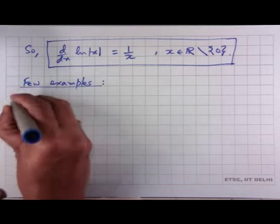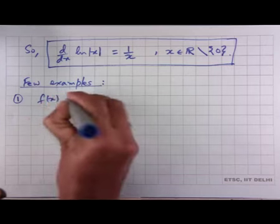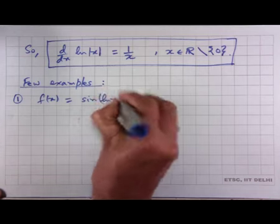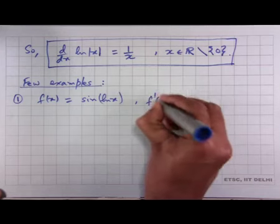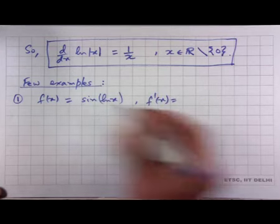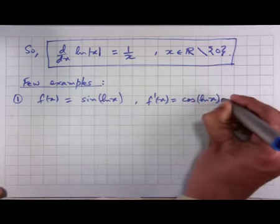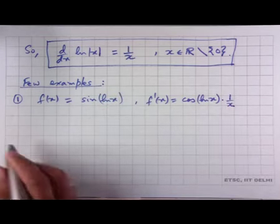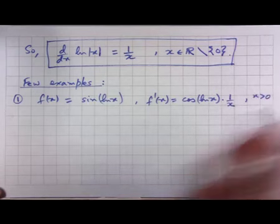Suppose f(x) = sin(ln x). Then what is f'(x)? We use the chain rule. The derivative of sin gives cosine, so we get cos(ln x), and then multiplied by the derivative of ln(x) with respect to x, which gives 1/x. So f'(x) = cos(ln x) / x. Of course, this is defined for every positive x.